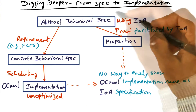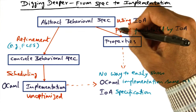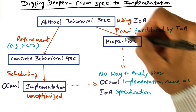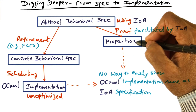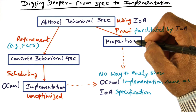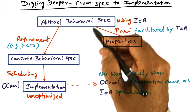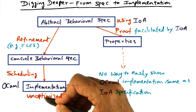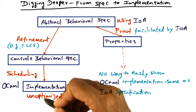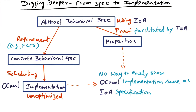In other words, this leg of the design exercise — proving properties of the spec, that it meets what we set out for the original subsystem — is in no way guaranteeing that those properties are actually in the implementation. There's no easy way to show that the OCaml implementation is the same as the IO Automata specification.